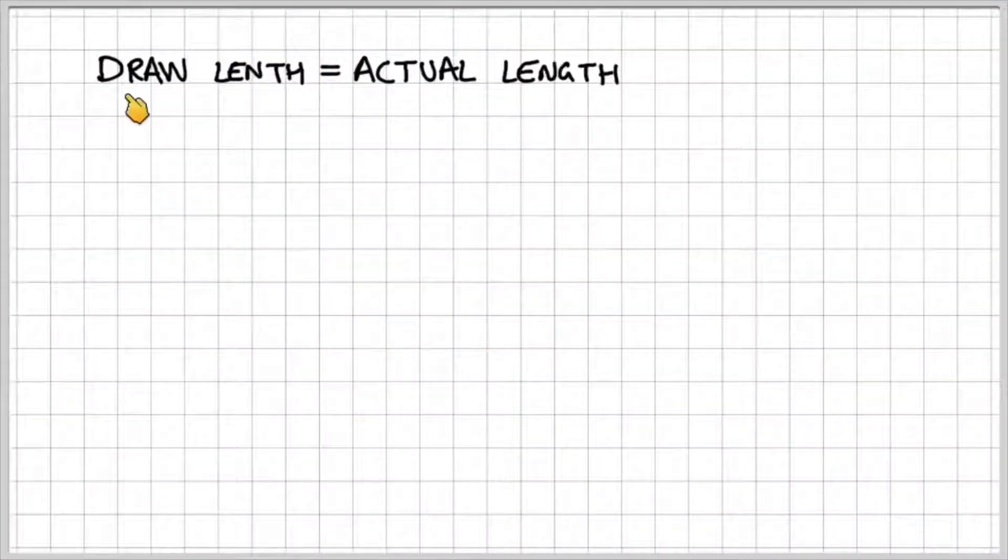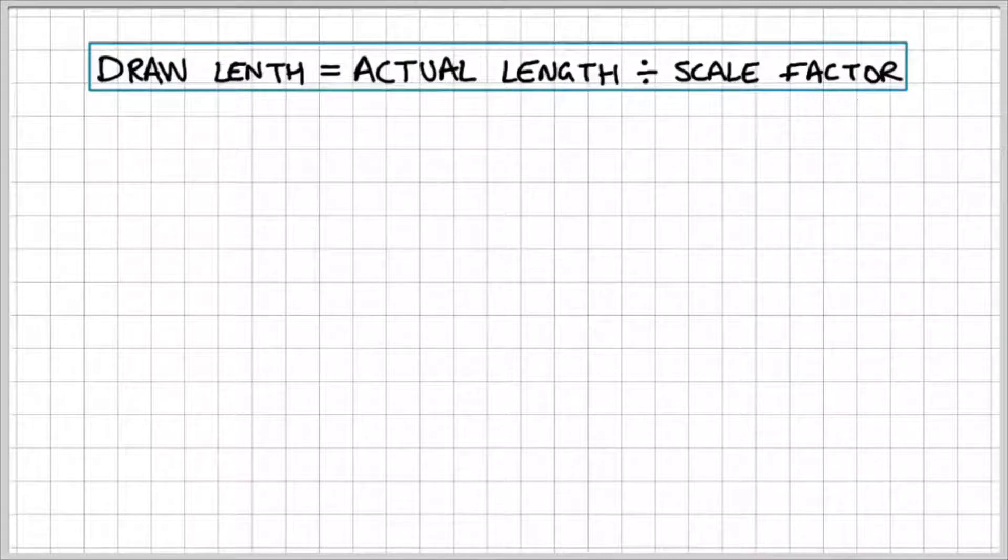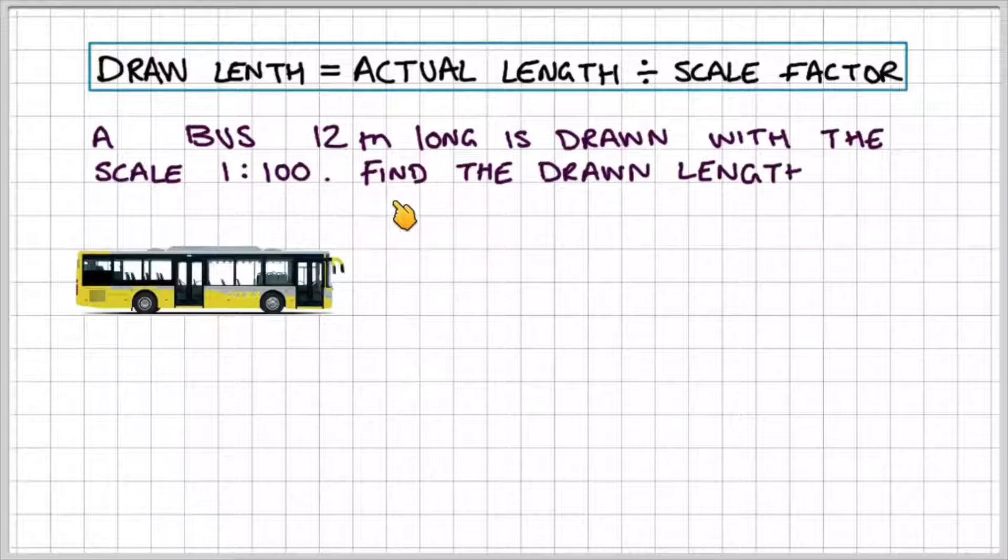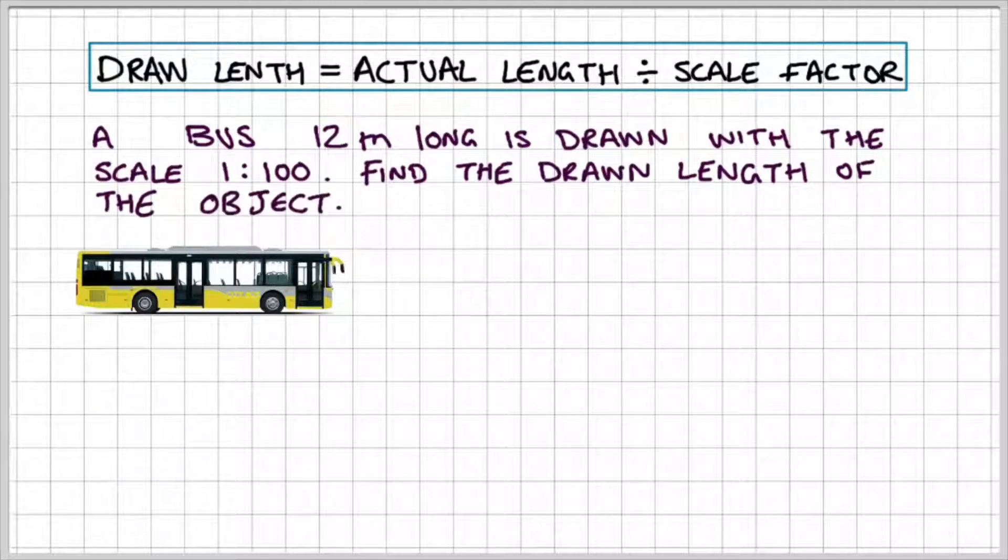Let's do an example where we consider the drawn length which equals the actual length divided by the scale factor. A bus 12 meters long is drawn with a scale 1 to 100. Find the drawn length of the object. So this bus is drawn with a scale of 1 to 100.